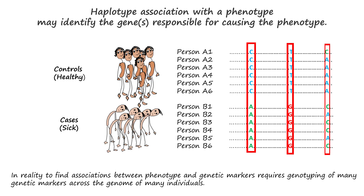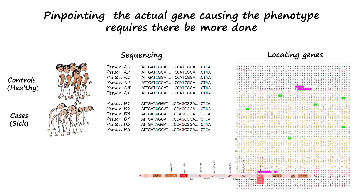Many genetic markers across the genome and many individuals need to be studied to find associations between phenotype and genetic marker or markers, to obtain a rough location of the gene causing a particular phenotype. Having obtained the rough location of the gene causing the disease, pinpointing the actual gene requires more work, such as sequencing the region, predicting genes in that region, and finding which of these possible genes is the one causing the disease.